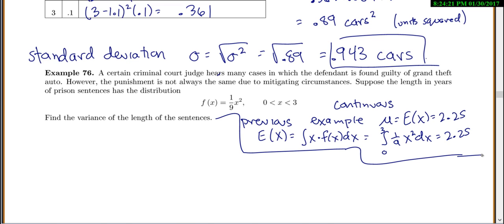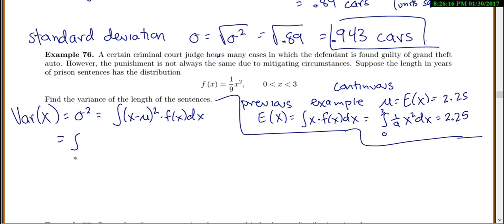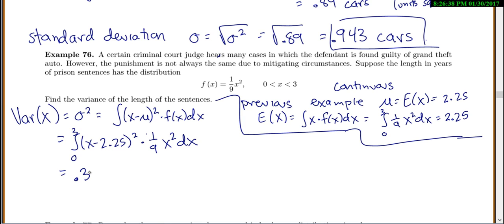Before you can find variance, you always have to find the average. Now the variance of x — or sigma squared — is the integral of x minus the mean, squared, times the PDF. In our case, we only care about it from 0 to 3, so we integrate from 0 to 3 of (x minus 2.25) squared times (1/9)x² dx. This equals 0.3375, so we've found the variance of the length of the sentences.